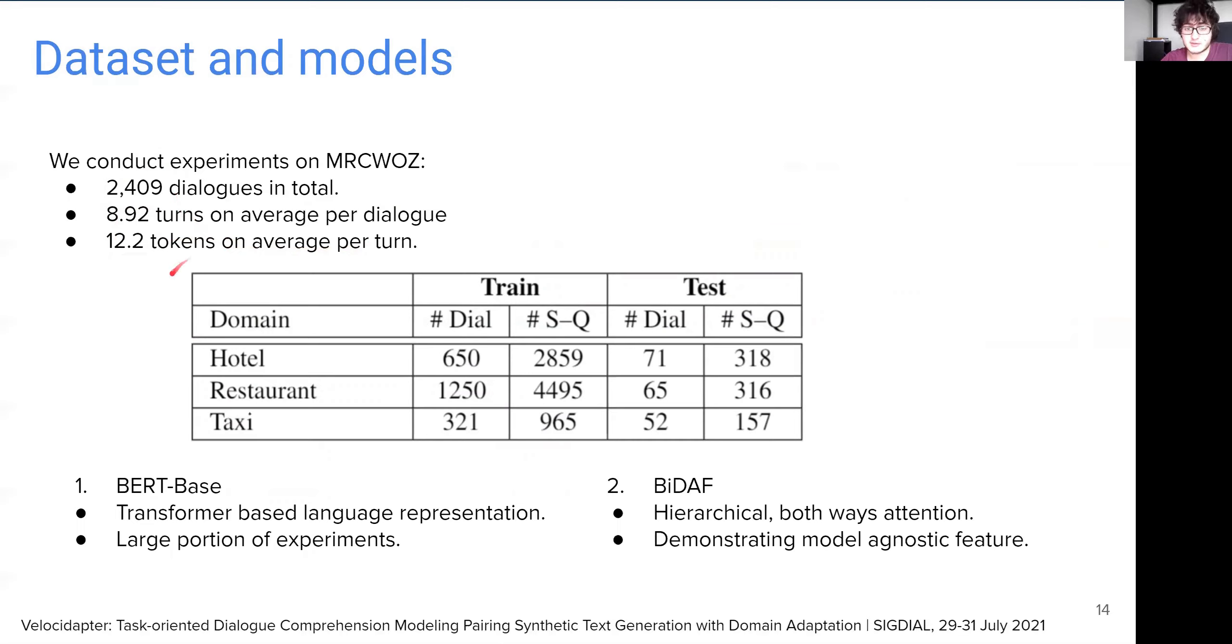We use two base models to experiment our framework with. First is BERT-BASE, which is a transformer-based language representation model, and it is used in the larger portion of our experiments. The second one is BiDAF, state-of-the-art, previous to the transformer era. It is a hierarchical model that uses attention both ways, from query to passage and passage to query. Results with this model meant to show the model-agnostic feature of our framework. We can also see the dialogue count and question splits for each domain over train and test sets in the table.